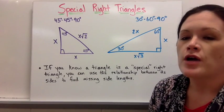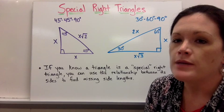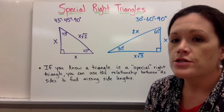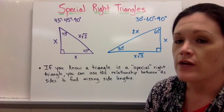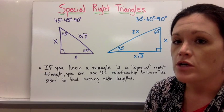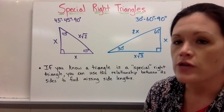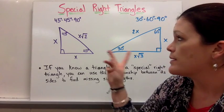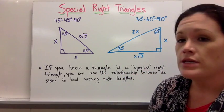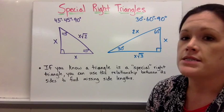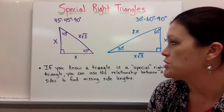There are two types of triangles we look at when we talk about special right triangles: the 30-60-90 triangle and the 45-45-90 degree triangle. If you're given enough information to know that a triangle falls into one of these two special triangle categories, then you only need one of its sides to figure out the rest because they have special relationships.